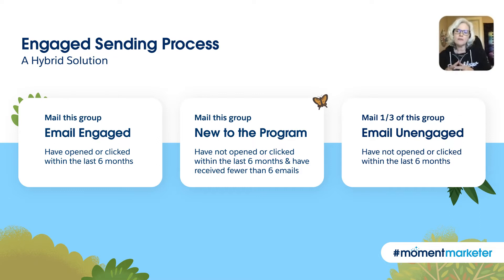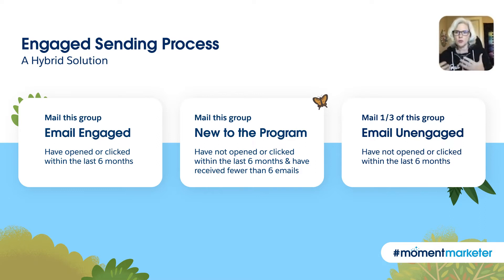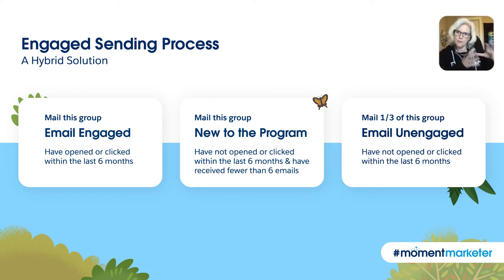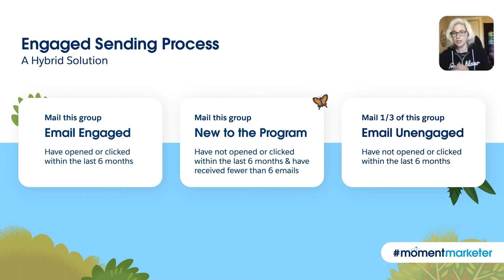We have a small set of people that are new. Beyond the first welcome, you want to send them a couple of emails with the regular cadence to see if they will develop a relationship and become part of this cream of the crop engaged group. So those people would get mailed every time we send an email until they reach the point where we determine that they're unengaged.